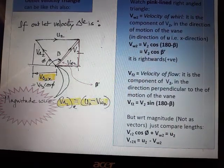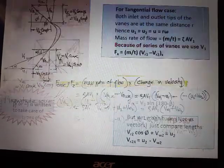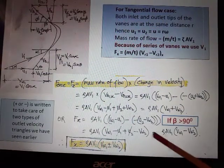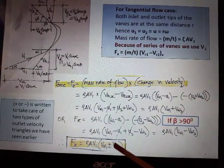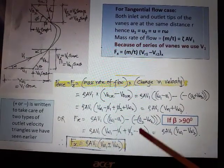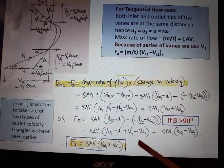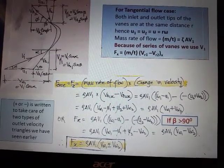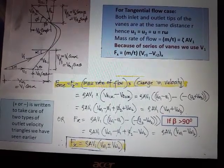We have used the same thing in earlier slide over here: u2 minus Vw2. And final expression becomes ρ*A*V1*(Vw1 ± Vw2). This is what is Fx.